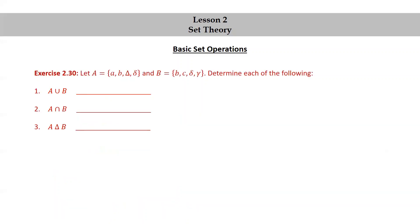Let's try an exercise. Let capital A be the set of lowercase a, lowercase b, capital delta, and lowercase delta, and capital B the set of lowercase b, c, lowercase delta, and lowercase gamma. Determine each of the following: the union of A and B, the intersection of A and B, and the symmetric difference between A and B. Now's a good time to pause the video, try this exercise yourself, and then resume the video to check your answers with mine.